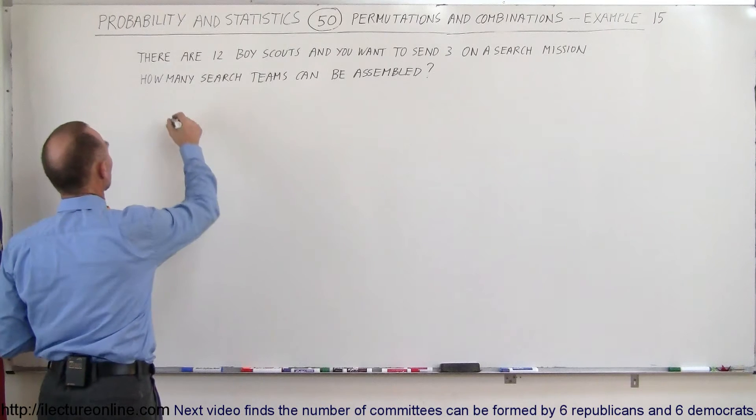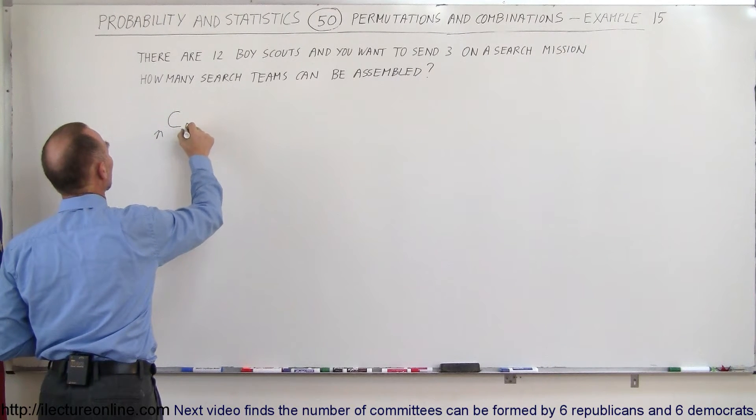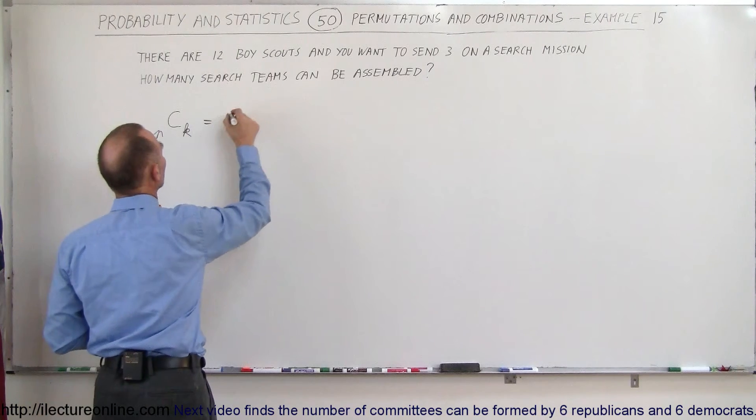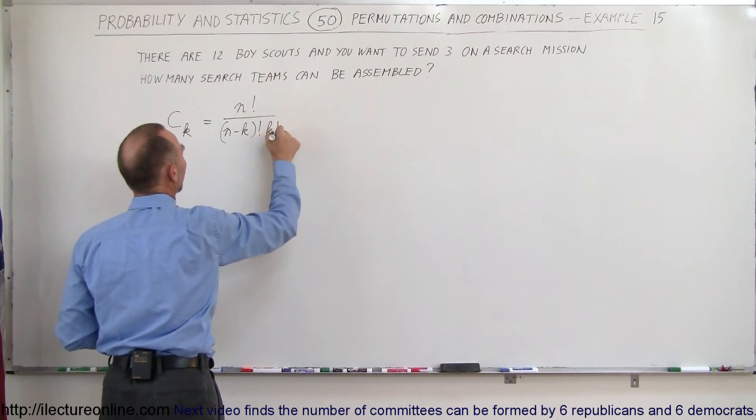So therefore, the number of combinations, it would be n choose k. In other words, you have a total number of n to choose from and you're going to send k, that is going to be equal to n factorial divided by n minus k factorial times k factorial.